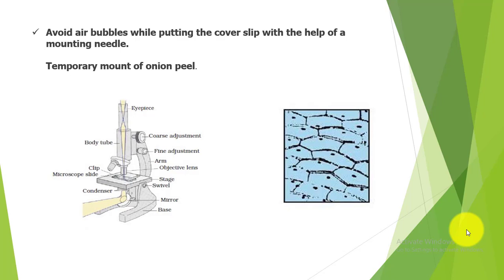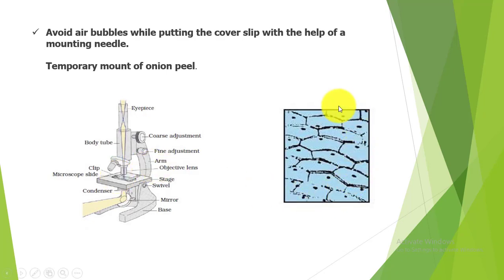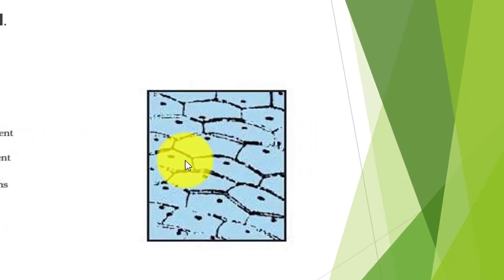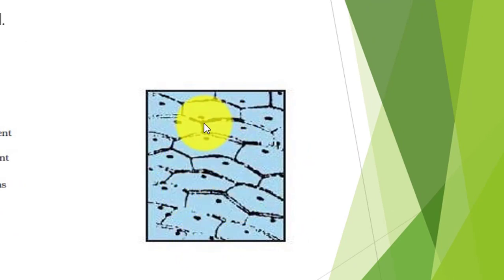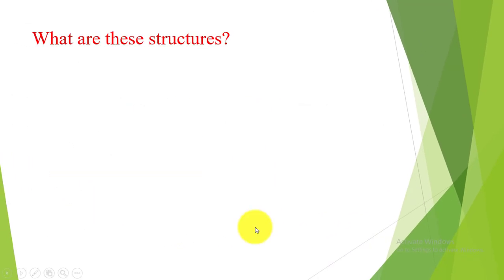We place this glass slide under the microscope and observe what the onion peel looks like. We can see a hexagonal structure — you can see different compartments, like a honeycomb structure. Similar to what Robert Hooke saw in cork, we also see compartments here in the onion peel.